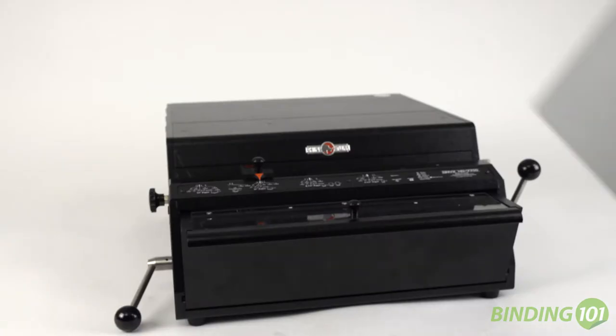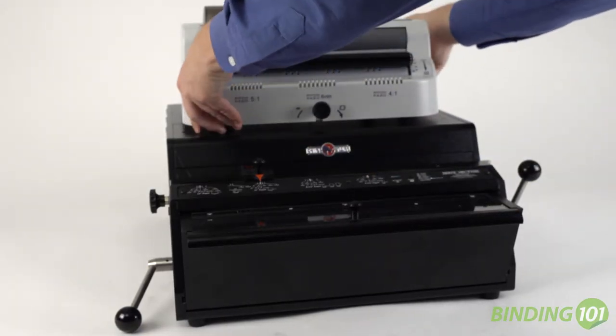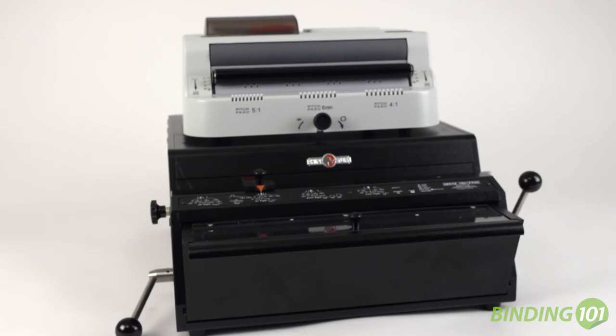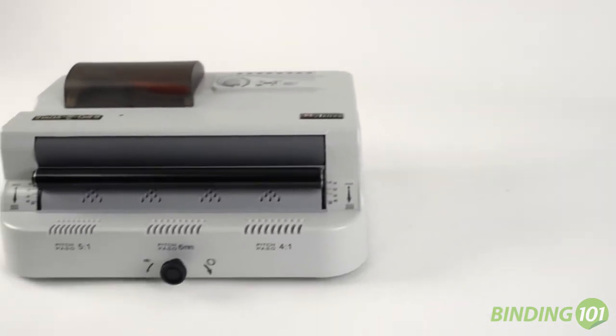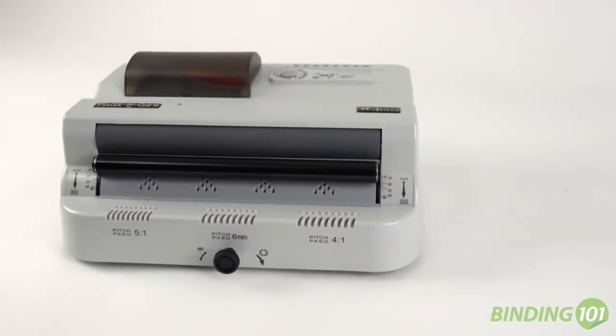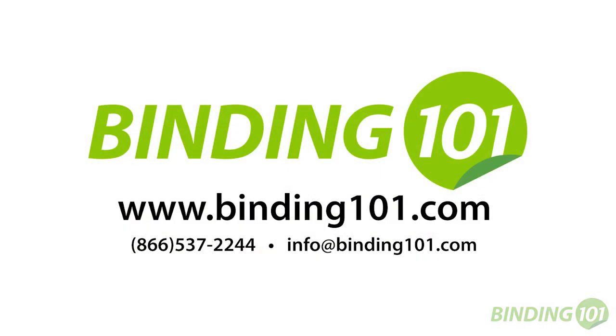Designed to work as a stand-alone unit, but is small enough to sit on top of most punching machines. And that's the Achilles Finish a Coil M Coil Inserter, sure to increase your coil binding productivity.